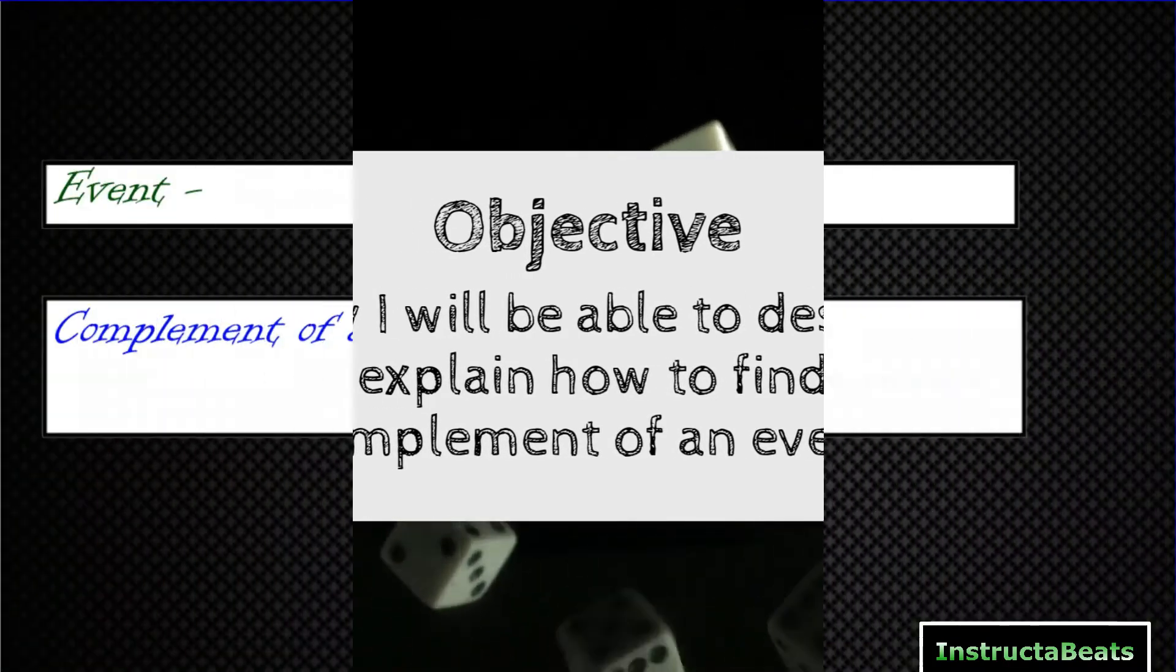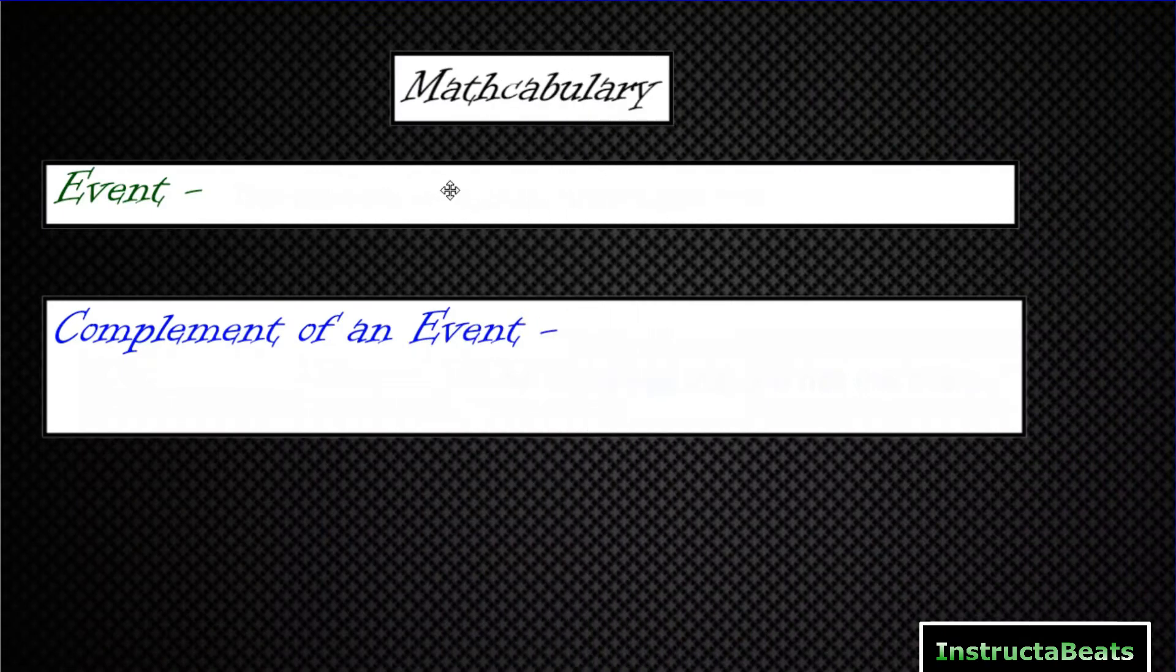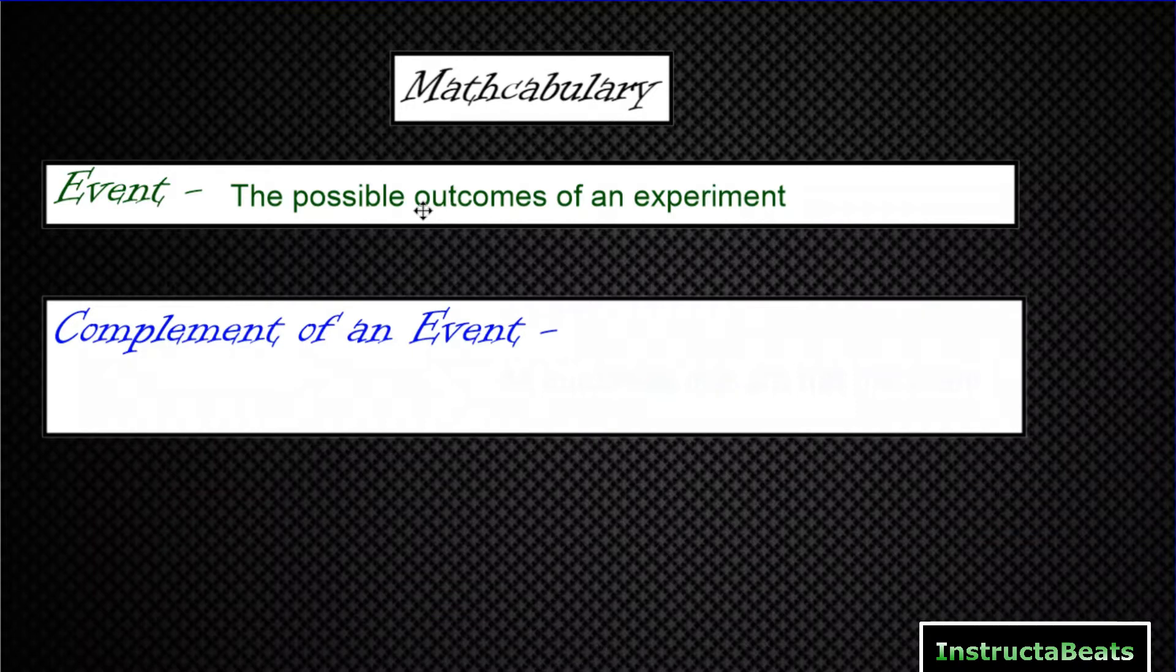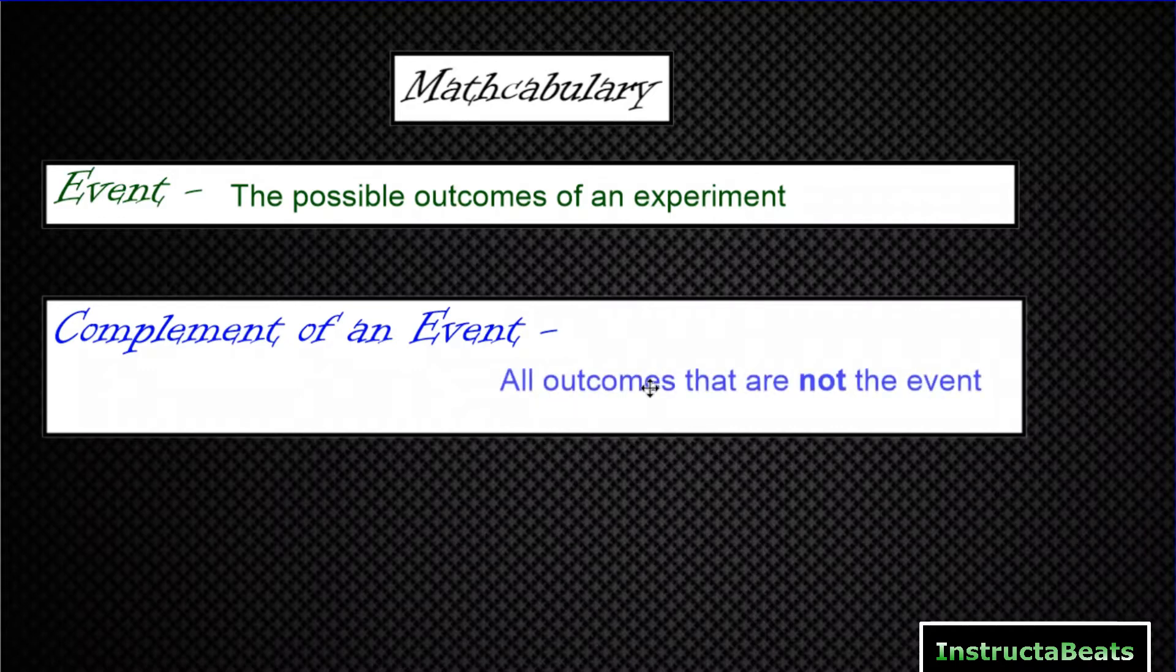So let's start with some math vocabulary. An event is a review from last lesson. An event is the possible outcomes of an experiment. So if your experiment is flipping a coin, your possible outcomes are heads or tails. The complement of an event are all the outcomes that are not the event. So this is kind of confusing at first, but when you think about it, it makes a lot of sense. If the event is finding the probability of heads, then the complement of that event would be all the other outcomes that are not heads, which would be tails.